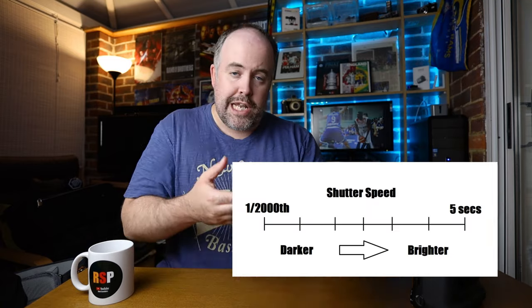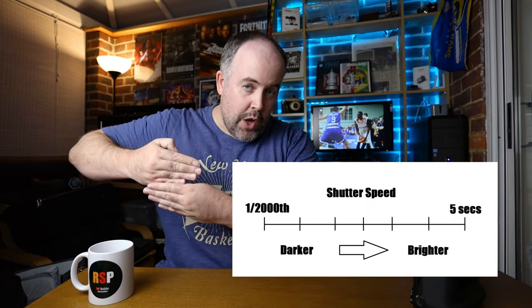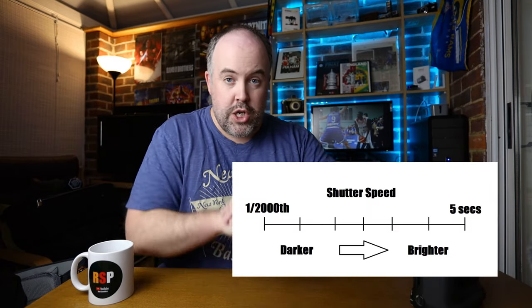There are three main things that will affect the exposure of your photo. Number one: shutter speed. In very simple terms, the faster your shutter speed, the quicker that shutter opens and closes. A much faster shutter speed is open for a really short period of time — that will make your photo darker. The slower the shutter speed, it's open for longer, and that will make your photo brighter.